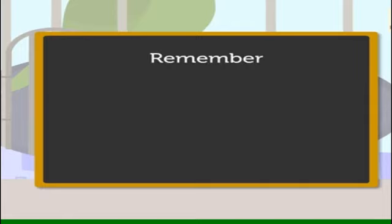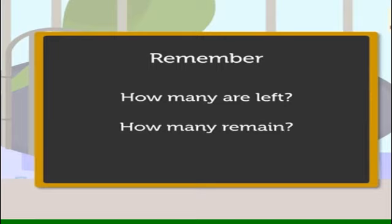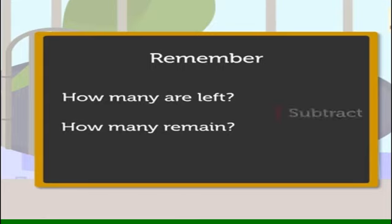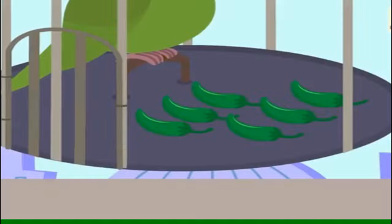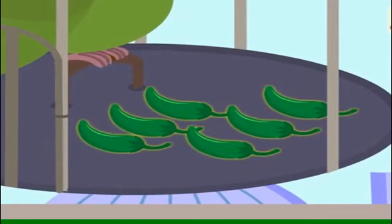Remember, when the words how many are left, how many remain, come in the story, then we have to subtract numbers given in the information. So, we subtract seven chilies minus one chili is equal to six chilies. There are six chilies left and we found the answer.